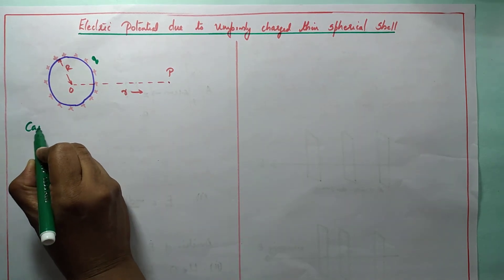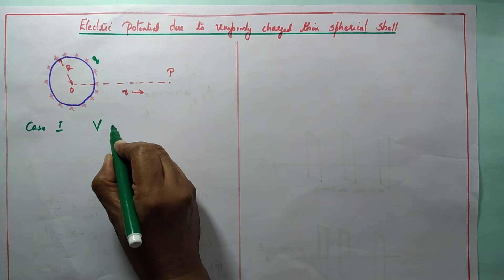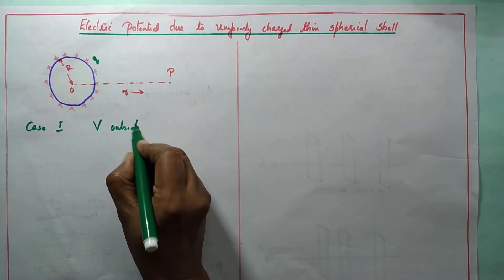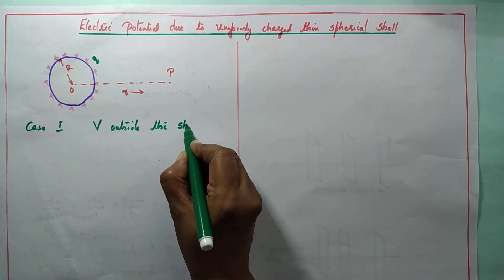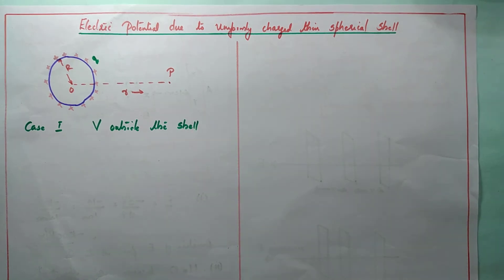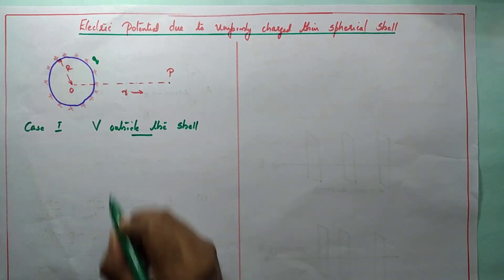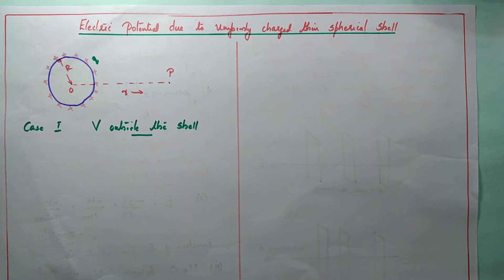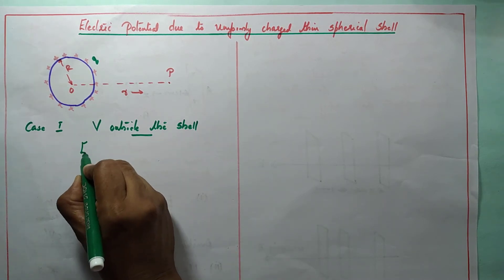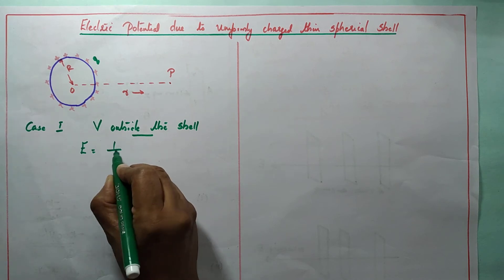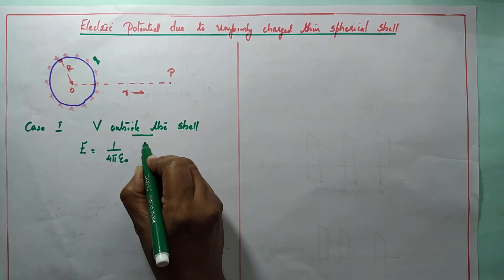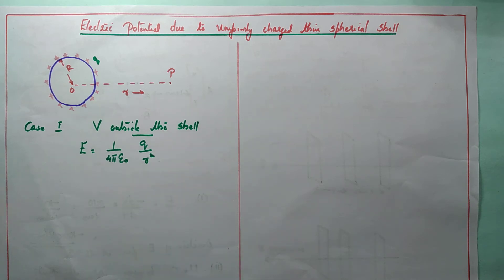Case 1: Potential outside the shell. The electric field outside the shell is given by the formula E equals 1 by 4π ε₀, Q divided by r squared. This was calculated from Gauss's third application.